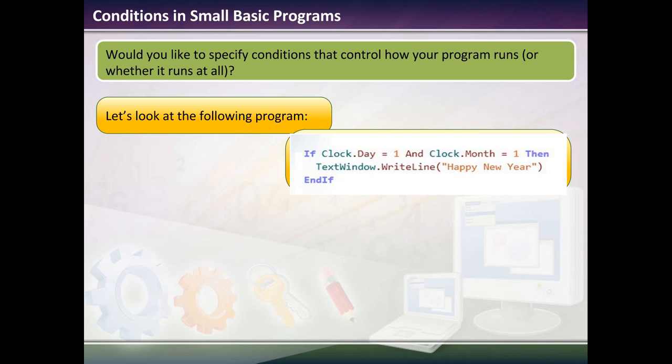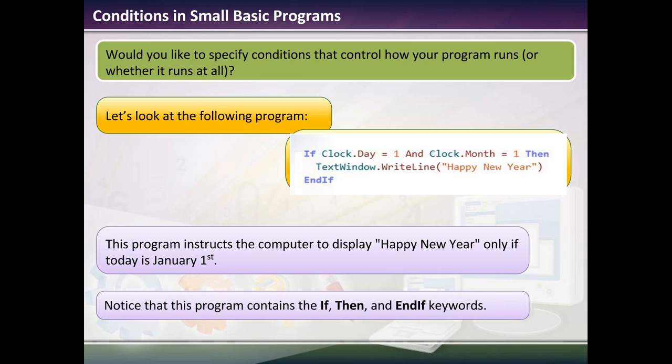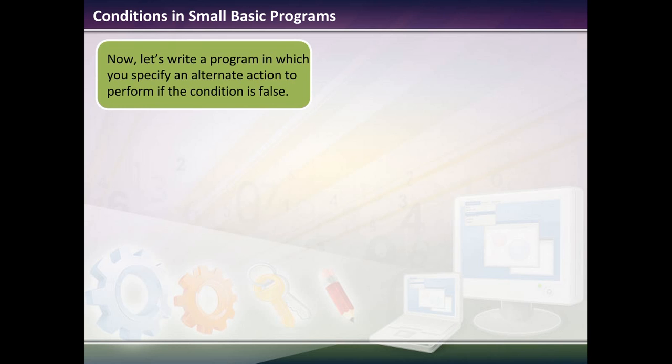This is a simple example of an if-then statement. It says if clock.day equals 1 and clock.month equals 1, then text window.writeline Happy New Year and endif. So what this means is if that statement is true, the program will read the clock on your computer. And if it is the first day of January, then it will print on the screen Happy New Year. If not, it won't print it.